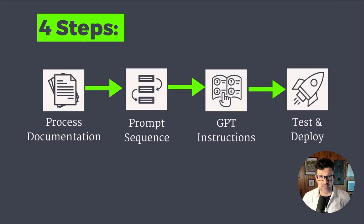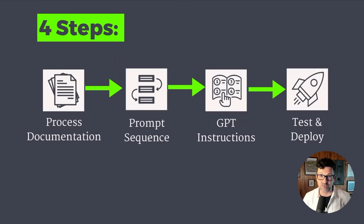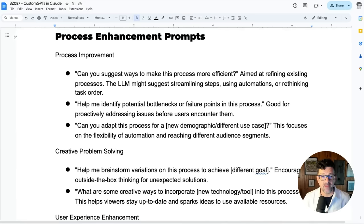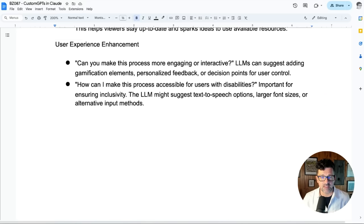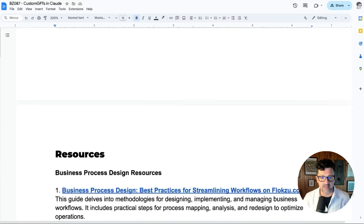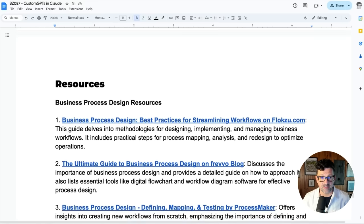A couple of other things you might want to consider trying — I have had really good success using Google's Gemini for the first two processes. I think OpenAI does okay, Claude does really well for those first two. But for some reason, Google's Gemini works really well for coming up with that initial step-by-step process and turning that into the prompt sequence. And there is a ton more in that cheat sheet, including a bunch of process enhancement prompts and creative problem-solving prompts that can be helpful when you're designing these process automation systems.